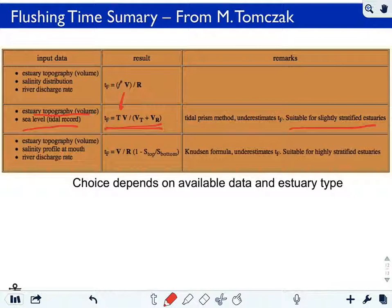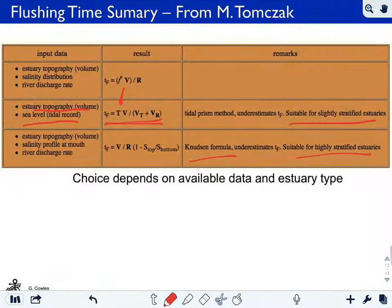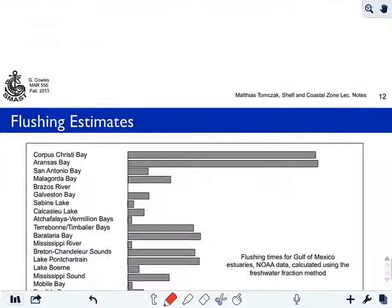The Knudsen formula assumes you are dealing with a stratified estuary, one where there's a distinct difference between the upper and lower layer salinity. So we need to use these formulas appropriately, and we'll see in class that you can end up with some different results.